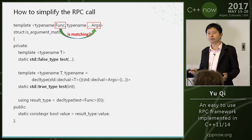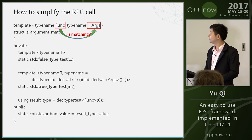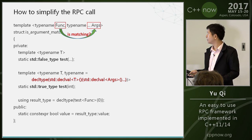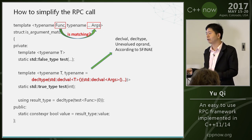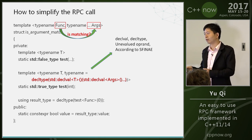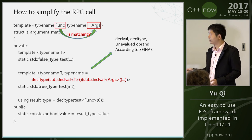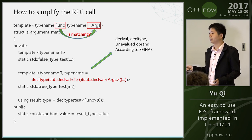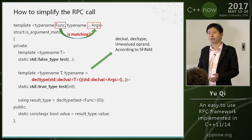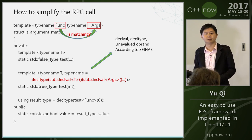I want to check whether the function and the arguments match. Pay attention to the highlighted code — here I use decltype and declval. This is an unevaluated operand: it doesn't really call the function, just checks whether it can be called. If the function cannot be called with those arguments, the template substitution will fail, the first overload will be selected, and the return type will be false_type.